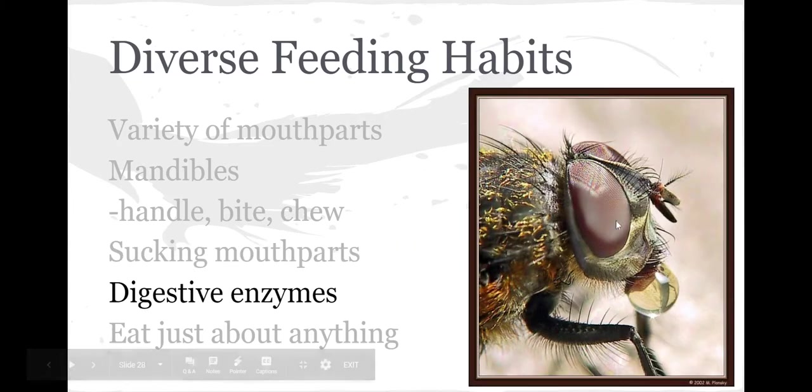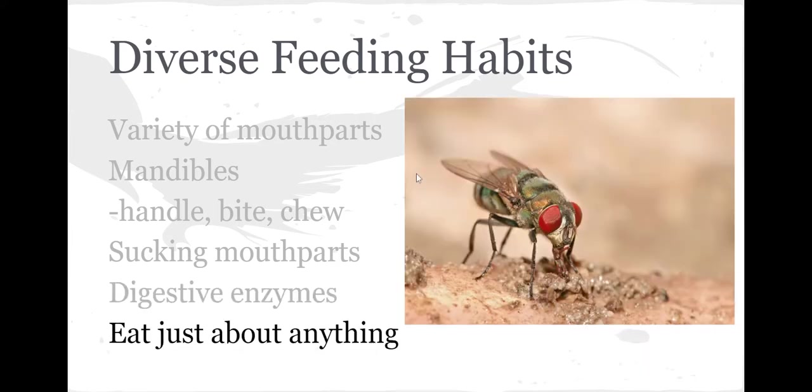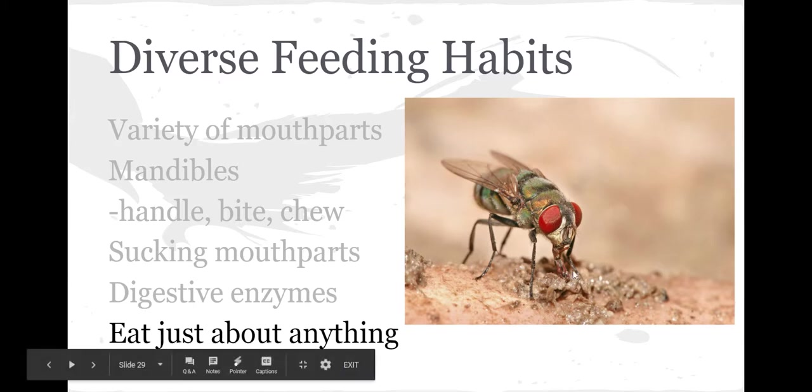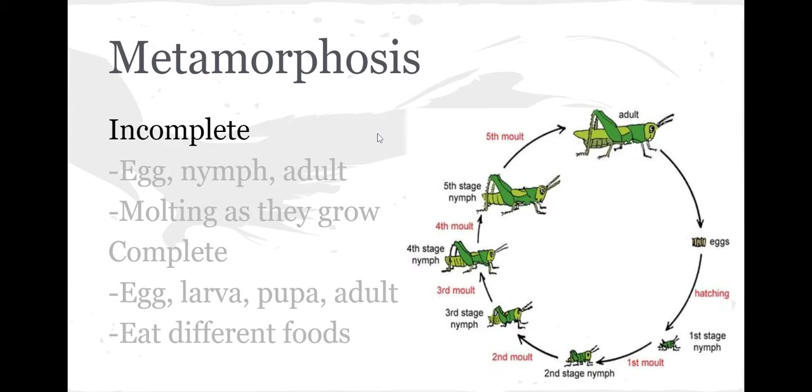Mandibles also include digestive enzymes. For example, a common house fly, when it lands on food, will actually spit out digestive enzymes that break down the food, then lap it up. It would be like if you saw a cheeseburger, you'd vomit on it, your digestive juices would break it down, then you'd take a straw and slurp it up—pretty gross sounding, but that's how some insects feed. They can eat just about anything, which is why there are so many insects.